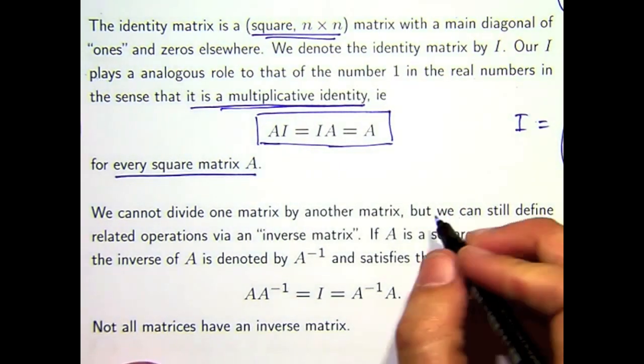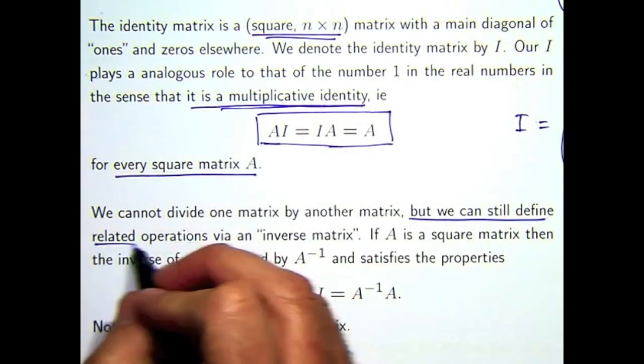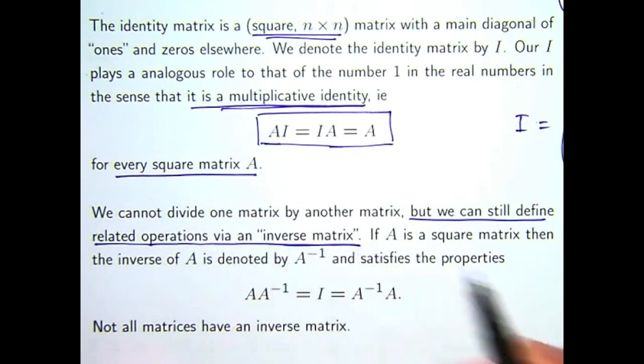So how do we get around it? Well, we can still define the related and important operations by what's known as an inverse matrix. So essentially we're going to use multiplication instead of division, just in a slightly different way.